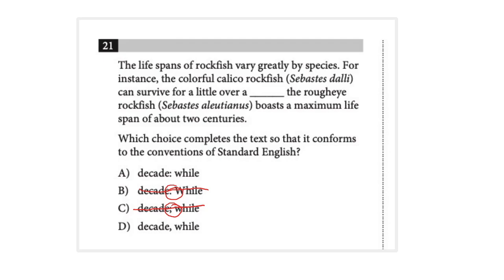Let's look at these other two examples. "The lifespans of rockfish vary greatly by species. For instance, the calico rockfish can survive a little over a decade, while the rough-eyed rockfish boasts a maximum lifespan of about two centuries." That's going to be a comma. We could talk more about the colon, but a contrast word like 'while' very rarely comes right after a colon. There's no need for a colon here — this one can survive for a little over a decade, while the other can survive for about 200 years.